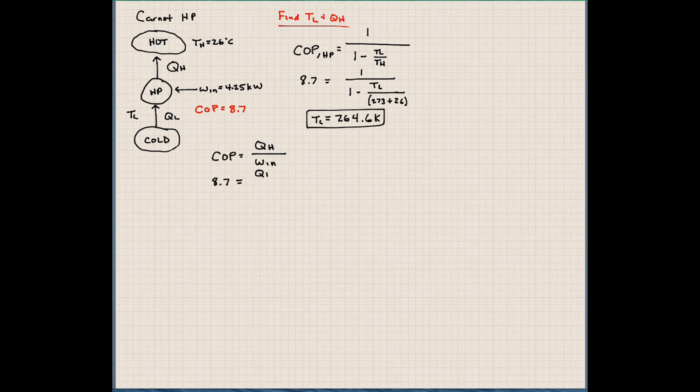So our coefficient of performance here is 8.7. QH, that's what we're trying to solve for, and we know that we put in 4.25 kilowatts of work into this system. So here, we know that QH would be equal to 36.98 kilowatts if you solve for QH in that above equation.